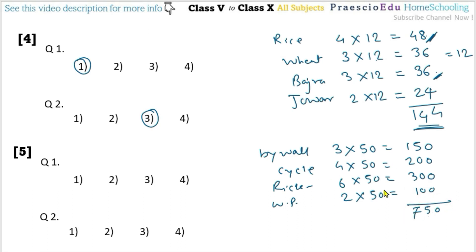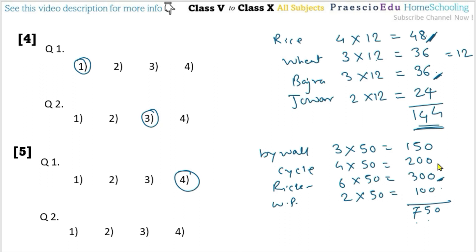Question 1: information about how many students is given in the pictograph? Total is 750 — option number 4. Question 2: how many students coming by rickshaw are more than students coming by cycle? Rickshaw = 300, cycle = 200, difference = 100 — option number 3.